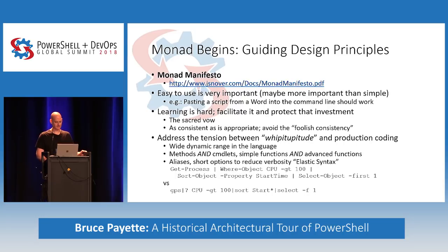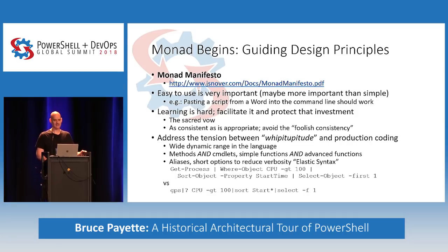We also wanted to address the tension between whipupitude — which is a Perl word — and production coding. The survey had said that ad hoc automation was very important for Windows, so the ability to write small scripts or even do things on the command line was really important. This implies the ability to do a lot on the command line versus production coding, where you want to support the code you're producing down the road. This results in a very wide dynamic range in the language.